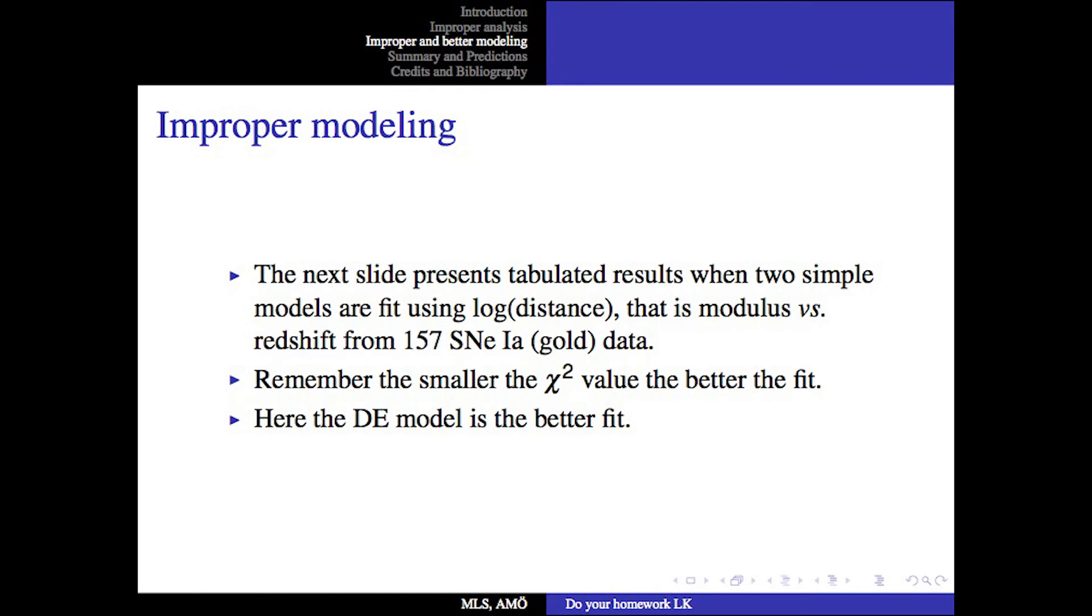The next slide presents tabulated results when two simple models are fit using log distance, that is modulus versus redshift from 157 supernova data. Remember, the smaller the chi-squared values, the better the fit. Here, the dark energy model is the better fit, in fact.